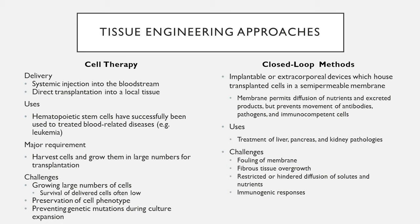An alternative strategy called closed-loop methods involves transplanted cells housed in a semipermeable membrane, either extracorporeal or implanted in the body yet separated from surrounding tissue. The membrane permits diffusion of nutrients and excreted products but prevents movement of antibodies, pathogens, and other immunocompetent cells. These often don't require host cell tissues, just the function of donated tissue or cells. This approach is used in liver, pancreas, and kidney pathologies. Major problems include fouling, fibrous tissue overgrowth, restricted diffusion, and immunogenic responses despite the sealed environment.